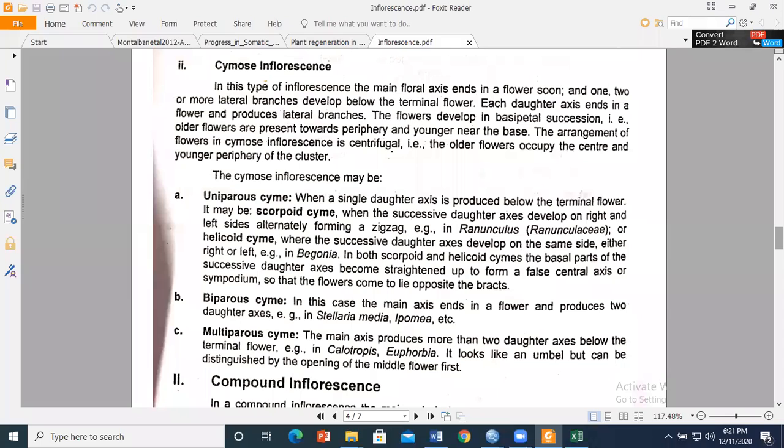In this case, there are flowers in the basipetal succession. In the basipetal succession, older flowers are towards the periphery and younger flowers are central. The arrangement of the flower in cymose inflorescence is centrifugal, meaning that older flowers occupy the center and younger flowers are present at the peripheral region.